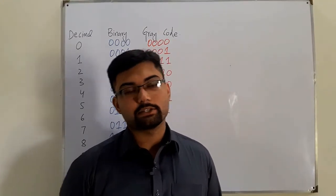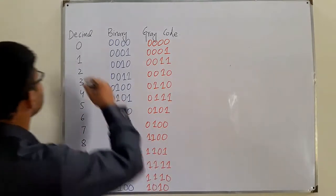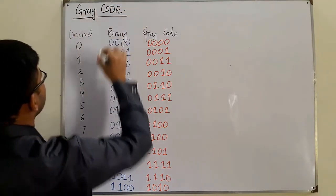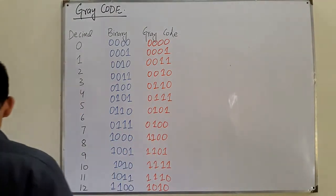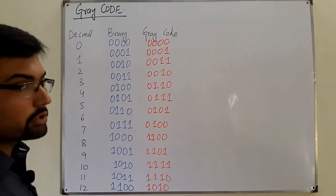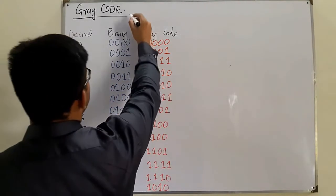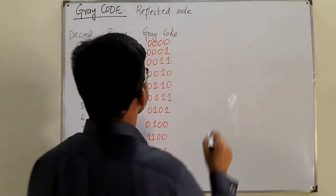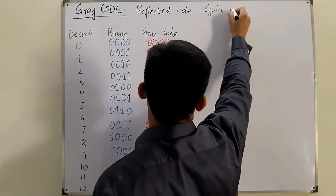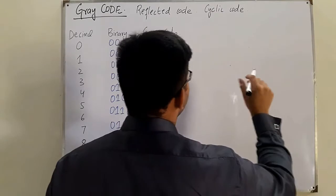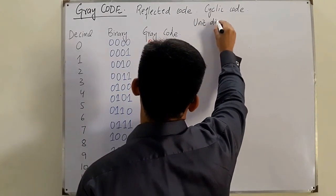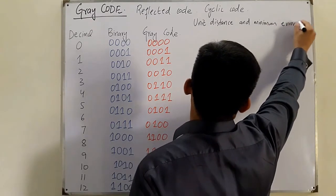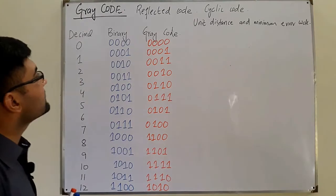Assalamu alaikum, Salar Khan here. Today we discuss the Gray Code. This gray code has a number of names: it's also called reflected code, cyclic code, unit distance, and minimum error code.